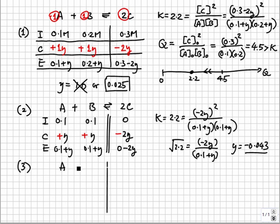Finally, we take one last example. This time, A and B are initially 0, and C is 1 molar. We set up the ICE table.